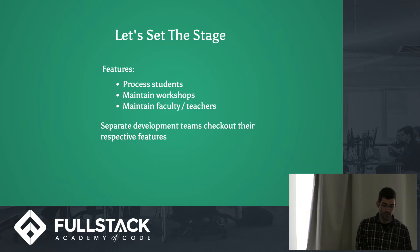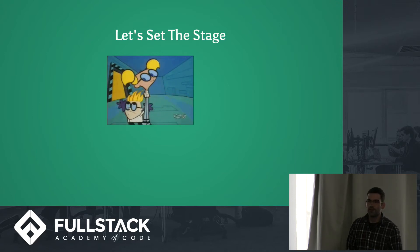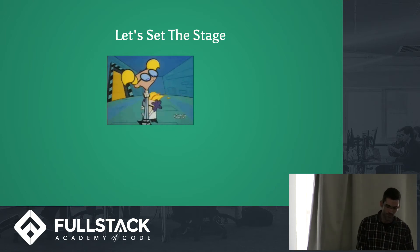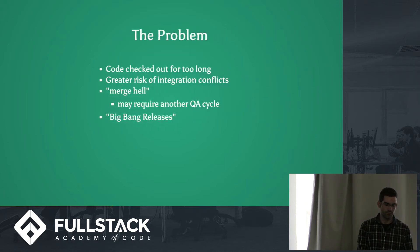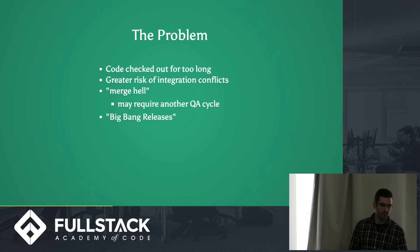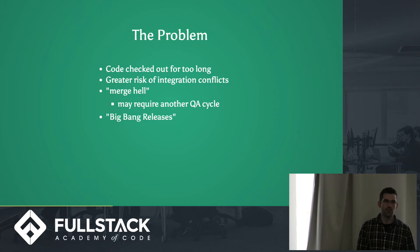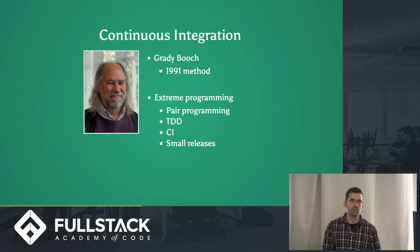Because the merge was so messy, the product is late, Dan the product manager's boss is on his case, and everyone is unhappy. This is where we introduce continuous integration. The core problem: the code was checked out for too long, creating a big risk of integration conflicts. They ended up in merge hell when integrating changes onto the master branch — sometimes the time to integrate could exceed the time to actually code the feature. This is known as a 'big bang release.'